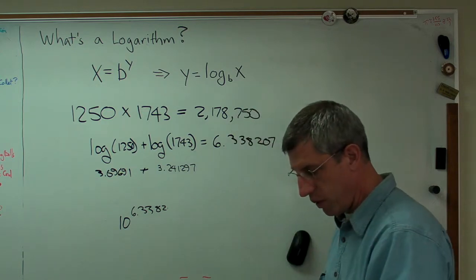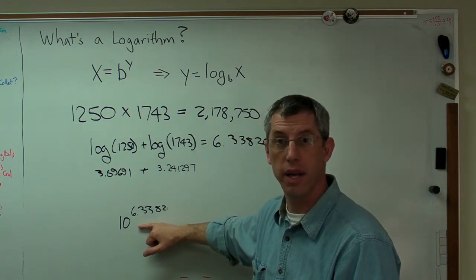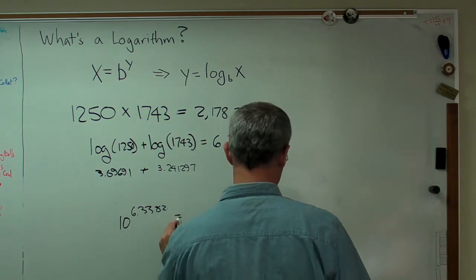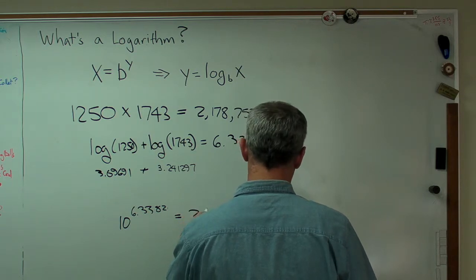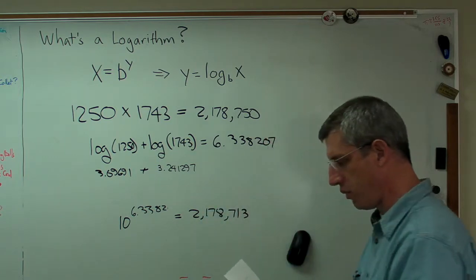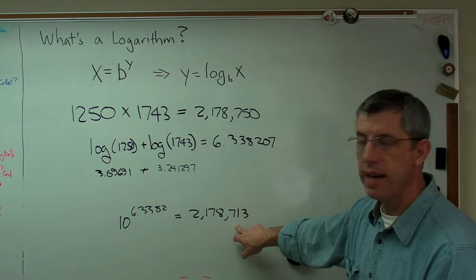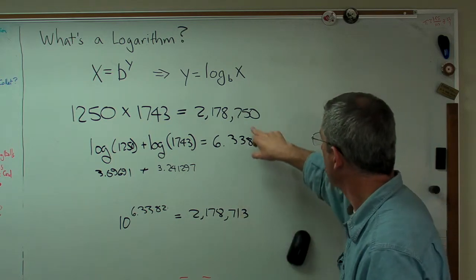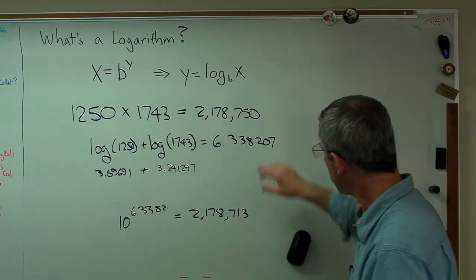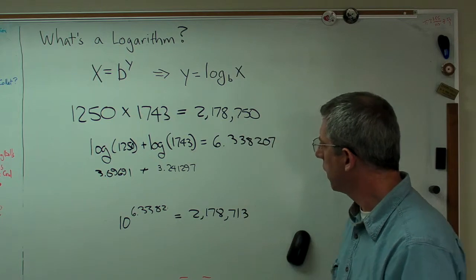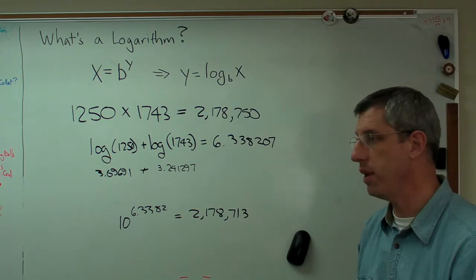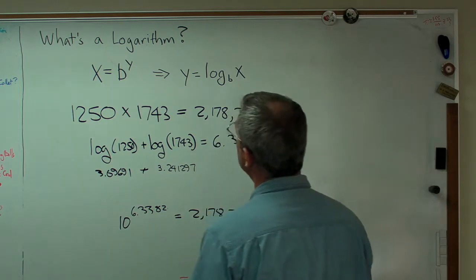So I've got 6.3382 as the exponent here. You wouldn't think that it would make that much difference, but it really does. Now I get 2,178,713 approximately. It's actually 712.8 something. That's about what I get. I've got a little bit of error down there. I'm off by about 37. That's just by rounding off those last couple of decimal places there. So when you're working with logarithms, you have to be careful.